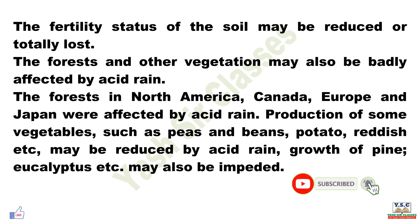The forests in North America, Canada, Europe and Japan were affected by acid rain. Production of some vegetables such as peas and beans, potato, radish, etc. may be reduced by acid rain.